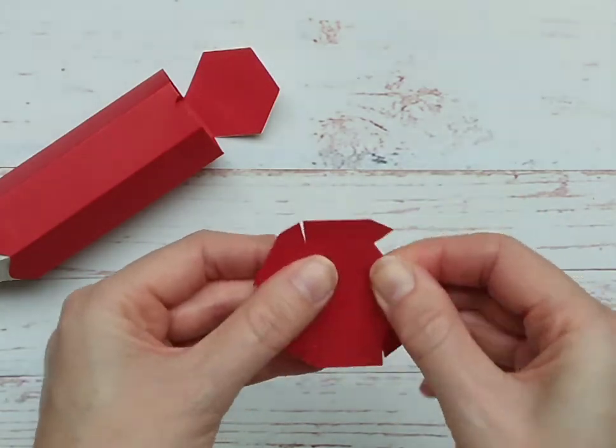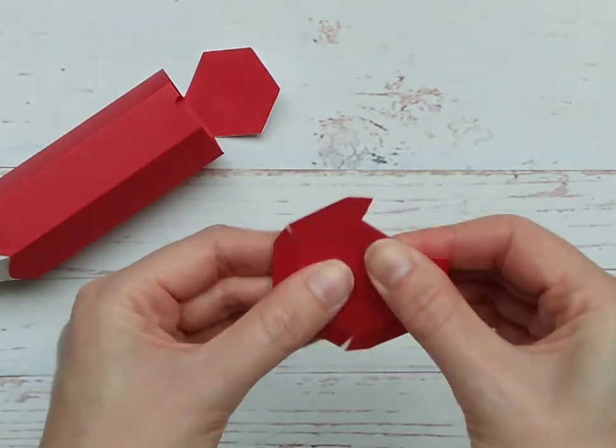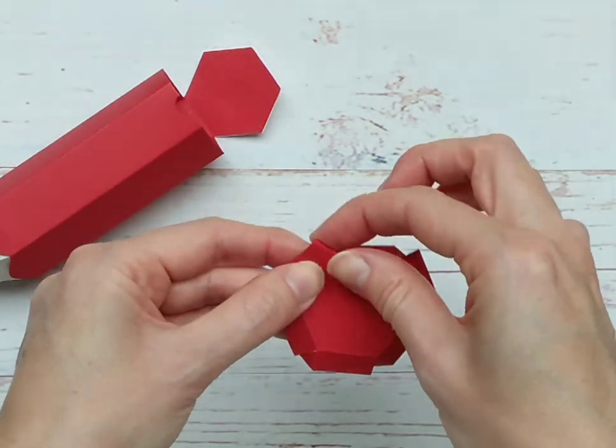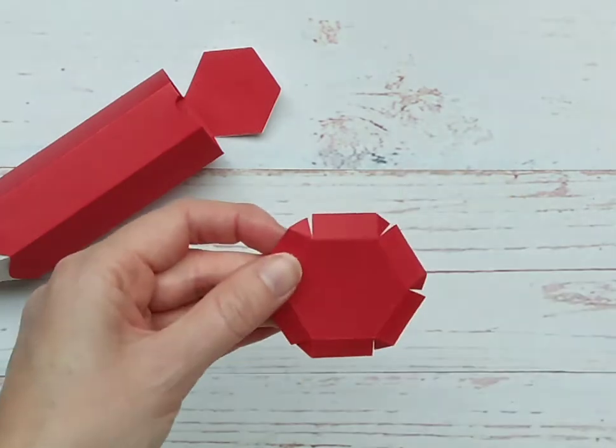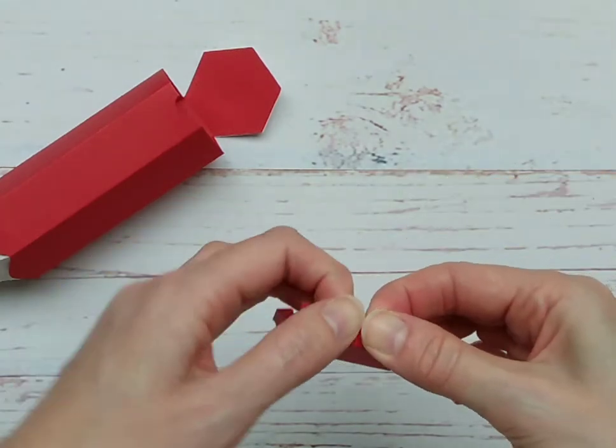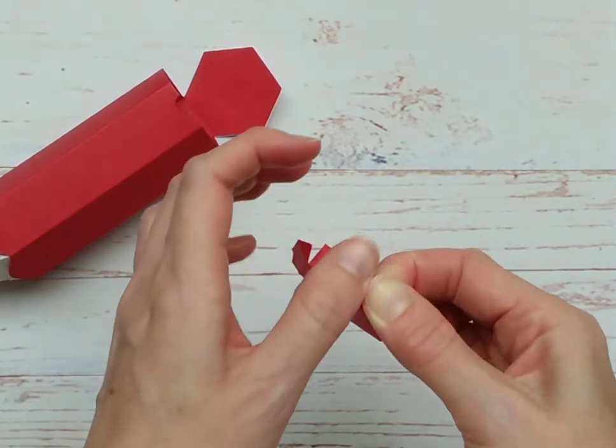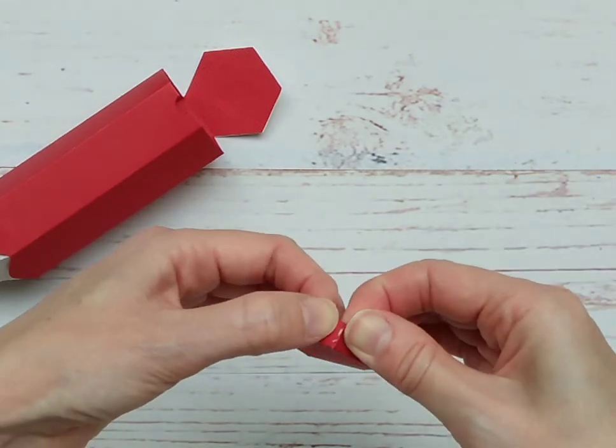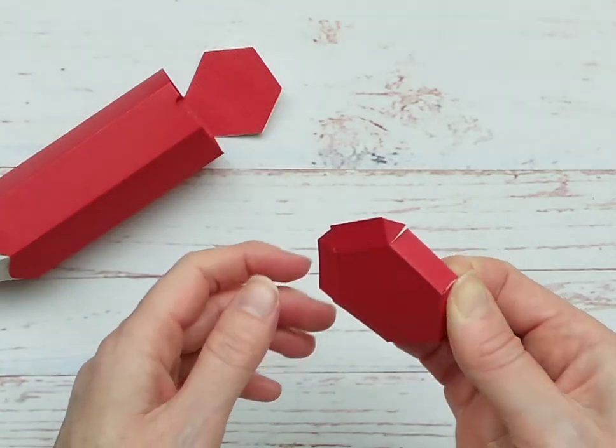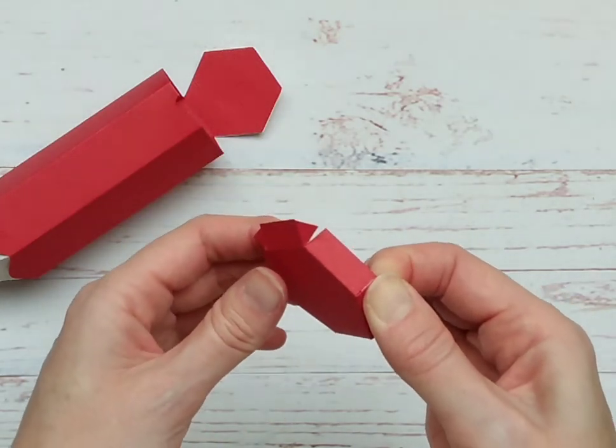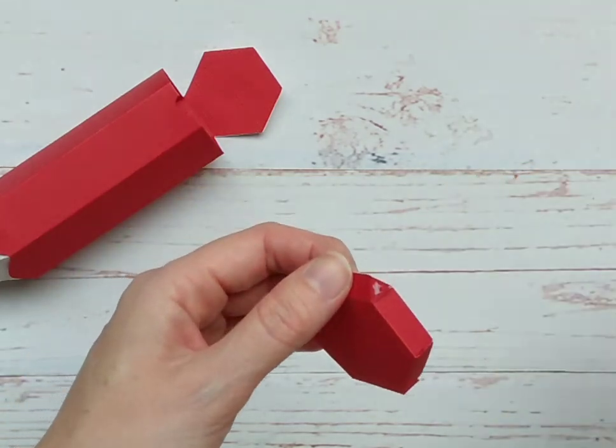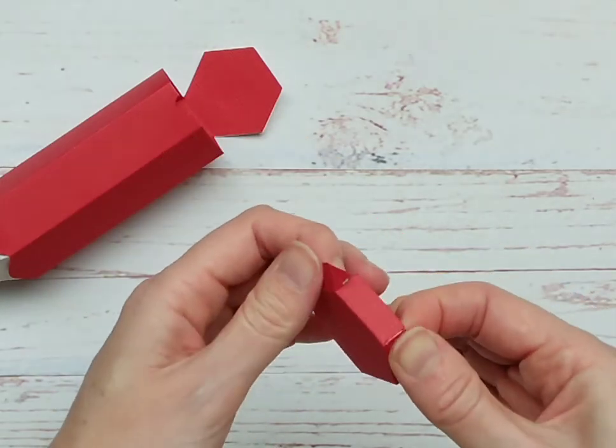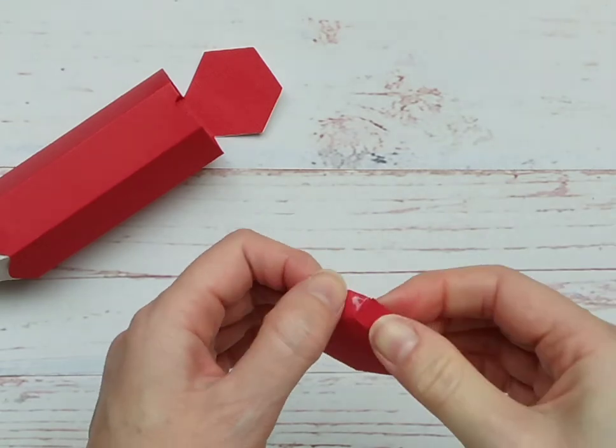Now for the lid insert, this is the part that's going to keep the lid closed. So you need to fold all of those score lines. Apply a little bit of glue to those little tabs and just work your way around doing each of the six tabs.